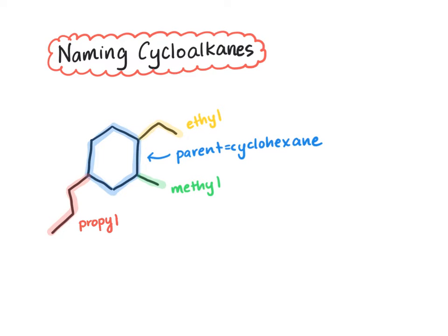When it comes to numbering, one of our carbons has to be number one that has a branch on it. So we want the lowest possible sum for our branch locations.